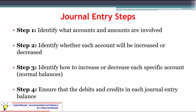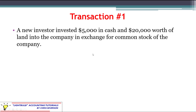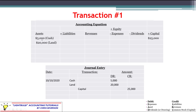Transaction number one: a new investor invested $5,000 in cash and $20,000 worth of land into the company in exchange for common stock. So there are two different things being invested and only one thing being returned — the common stock. We have two different assets coming into the company: cash for $5,000 and land for $20,000, totaling $25,000 of investment. Common stock is increasing by $25,000. Cash and land are both assets being increased, so they're both going to be debited — $5,000 and $20,000.